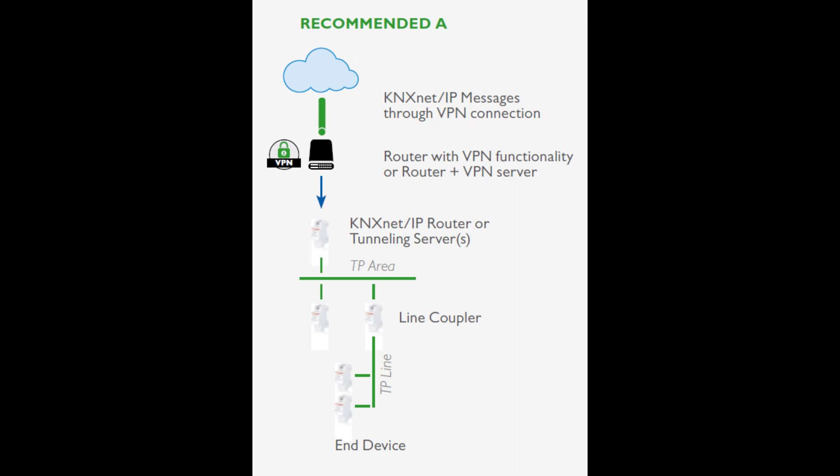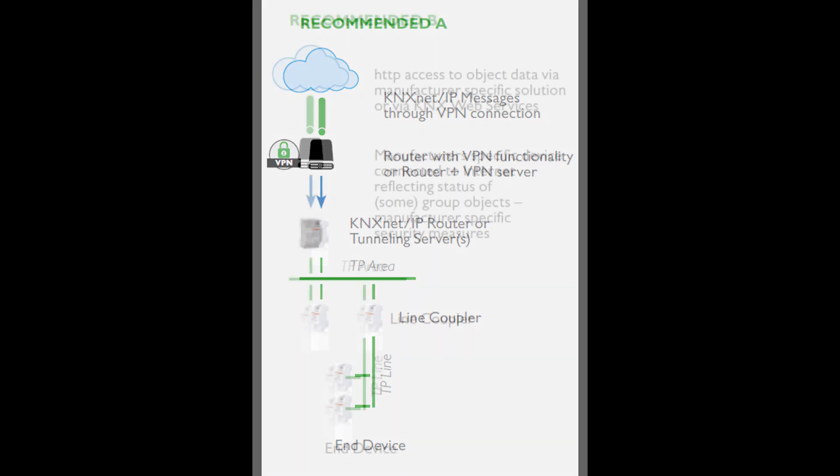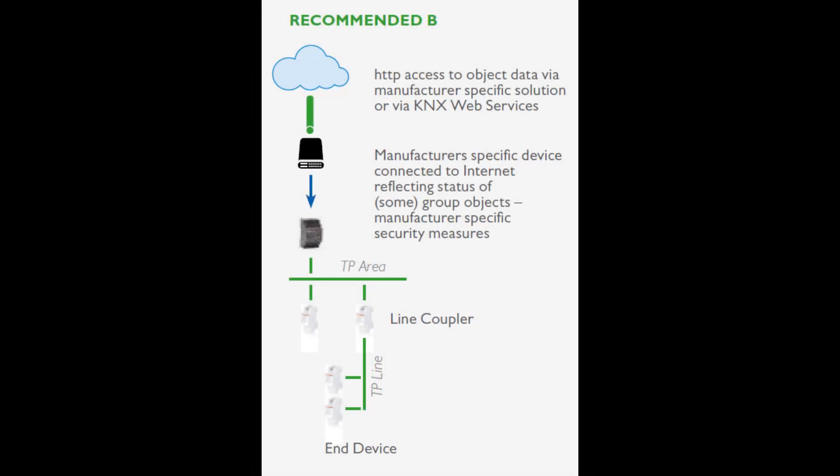This however requires a router that supports VPN server functionality or a server with VPN functionality. Another option is the use of dedicated manufacturer-specific solutions available in the market and visualizations through, for example, HTTP access. Additionally, KNX has specified in an extension to the KNX standard a KNX standardized solution for accessing KNX installations over the internet via web services.